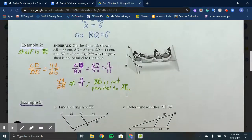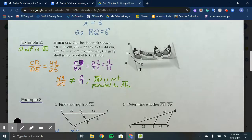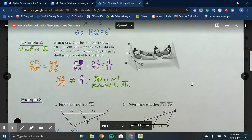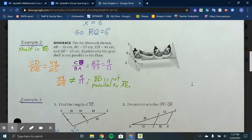Example 2 is looking at a shoe rack. On the shoe rack, AB is 33 cm, BC is 27, CD is 44, and DE is 25. Explain why the gray shelf is not parallel to the floor. The gray shelf is basically segment BD that they diagrammed on the side.